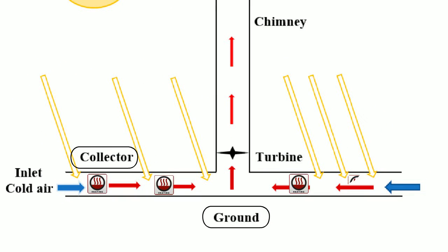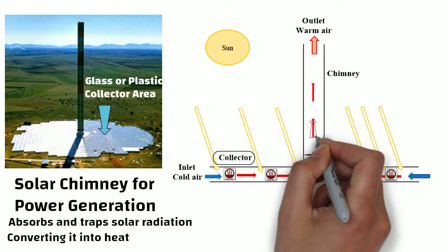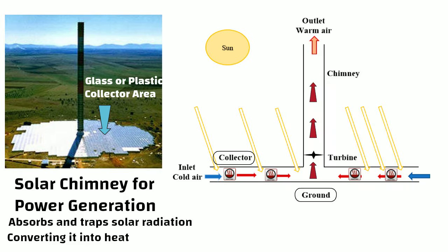As the air in the collector area heats up, it becomes less dense and that's why it starts to rise. This hot air is then channeled into a tall vertical chimney.